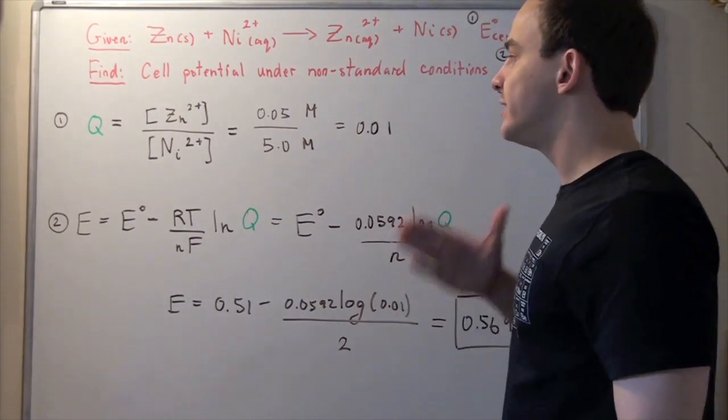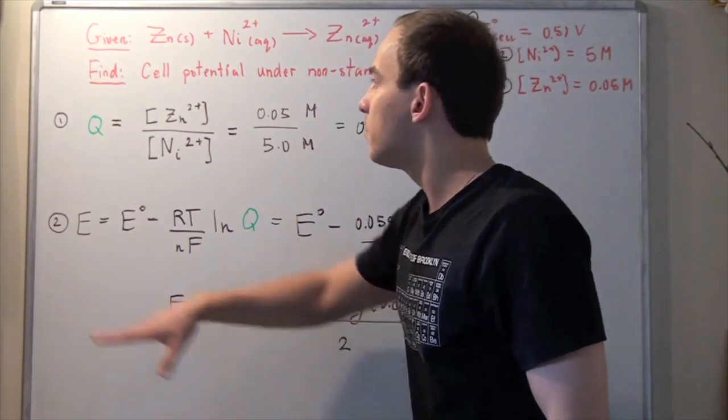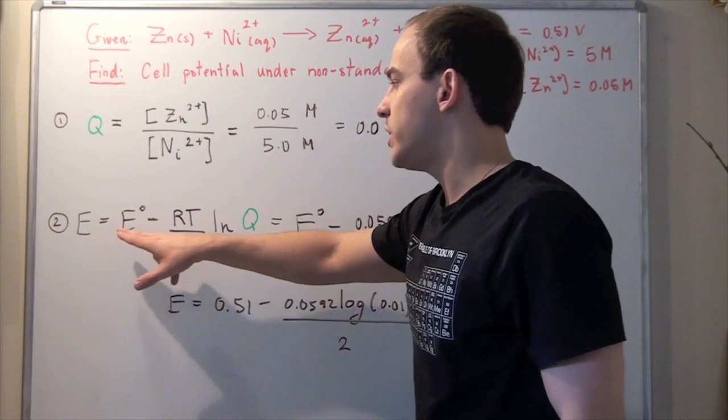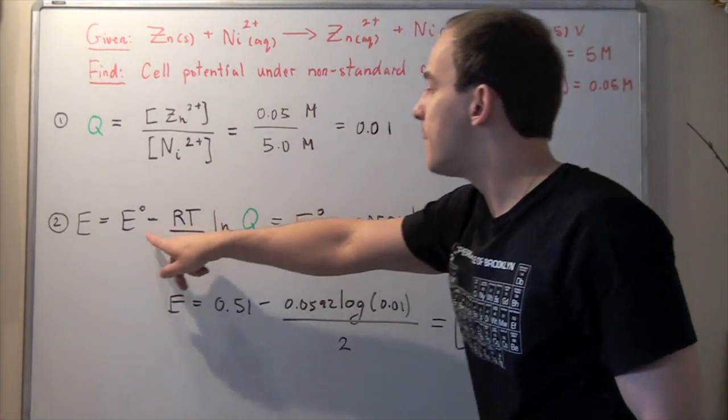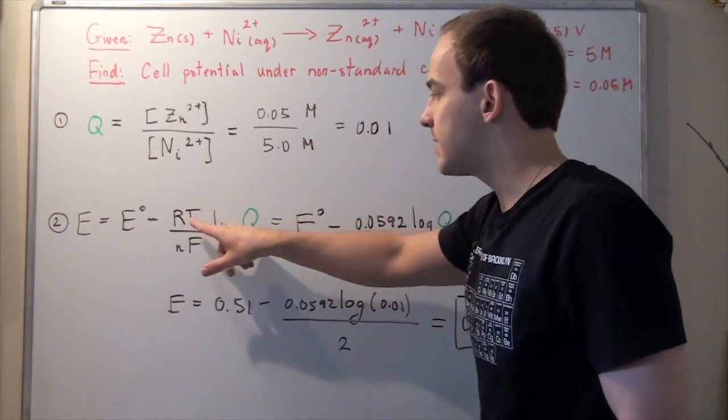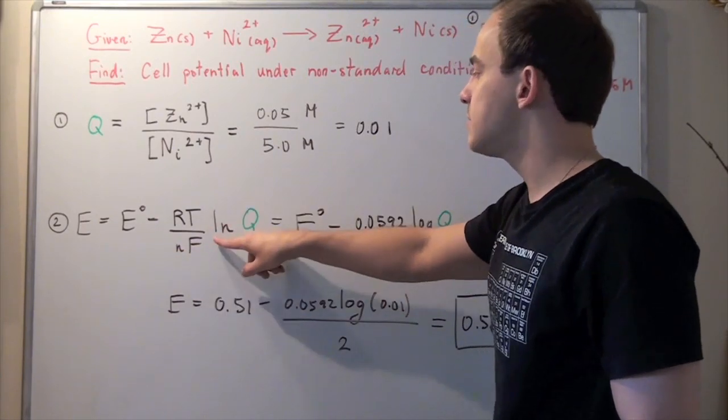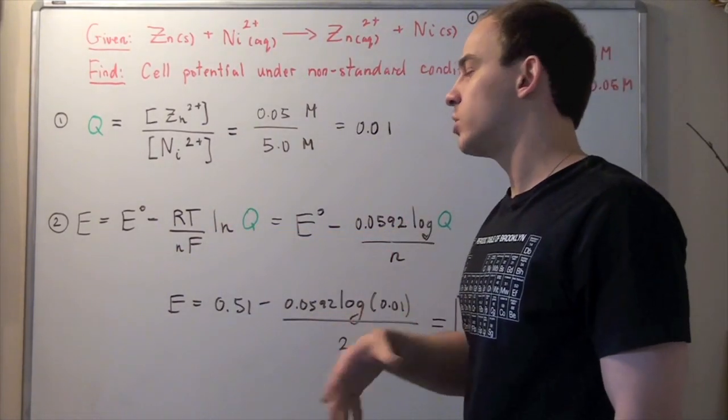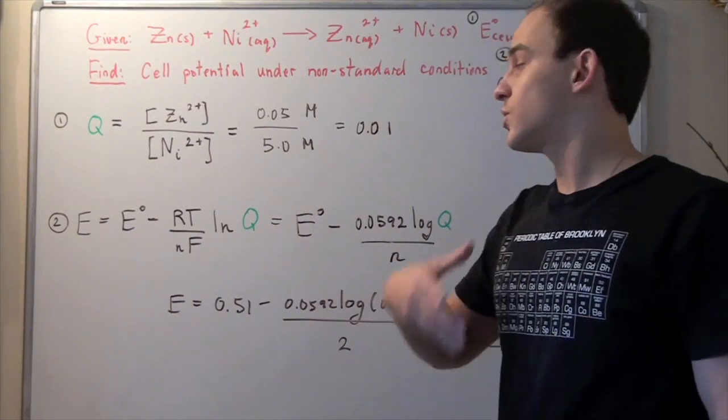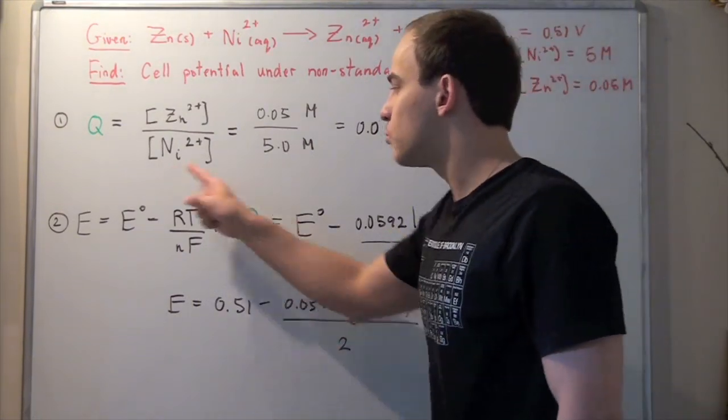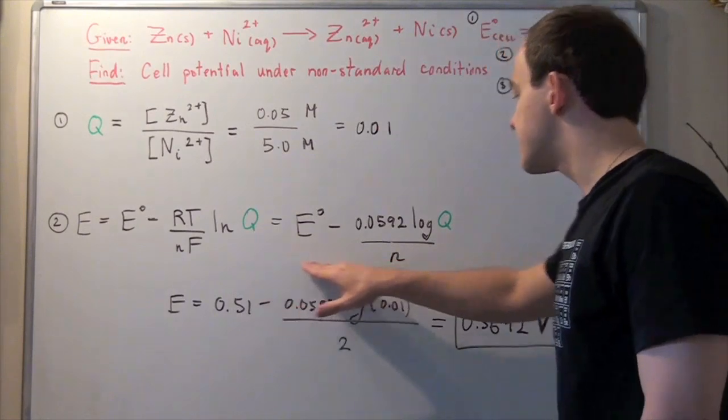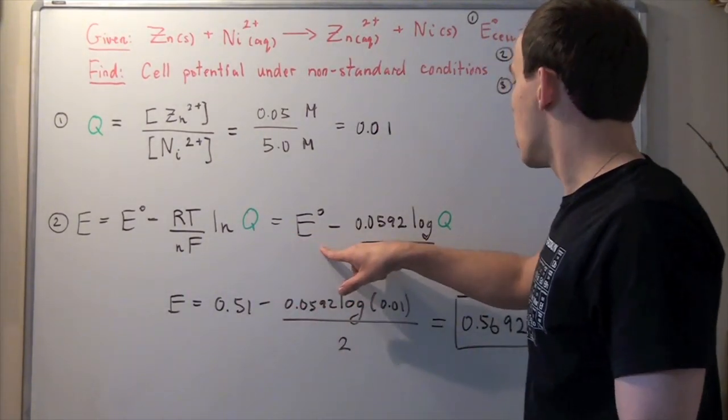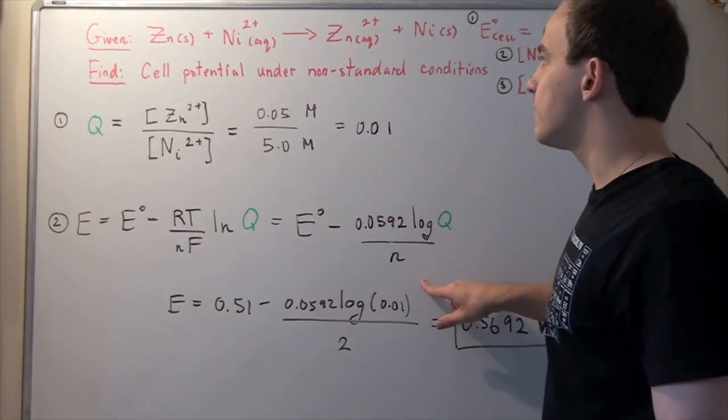In step 2, we're going to find the cell potential. E is equal to E standard minus RT divided by nF times the natural log of Q. Under a temperature of 25 degrees Celsius, we can rewrite this equation into this format. We know E standard and Q, so what is n?